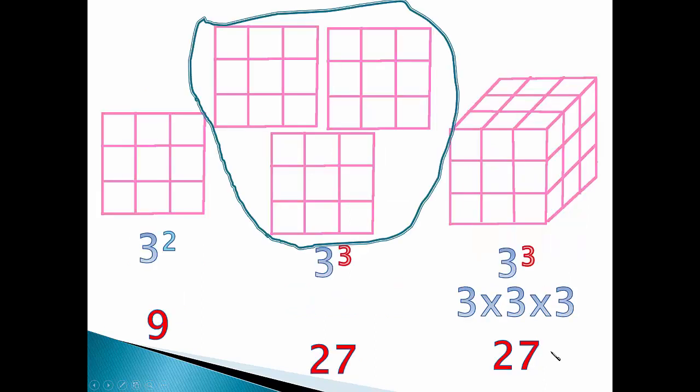What about 3? 3 squared is 3 times 3. 3 to the third power takes that answer and multiplies it again, it's 27 or as a cube. It's 27.